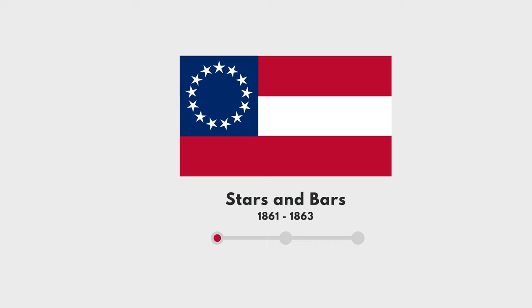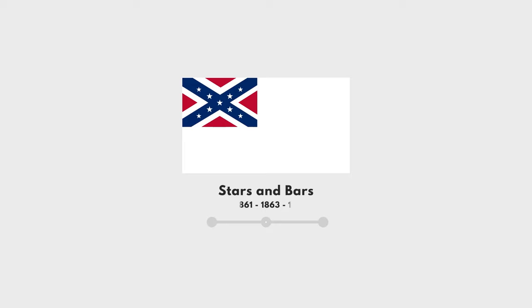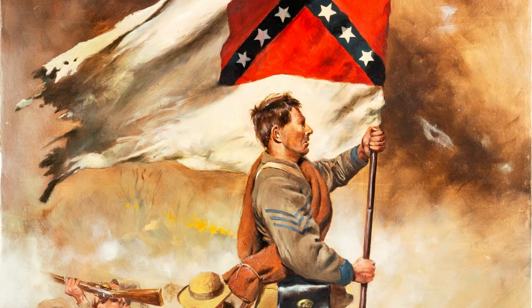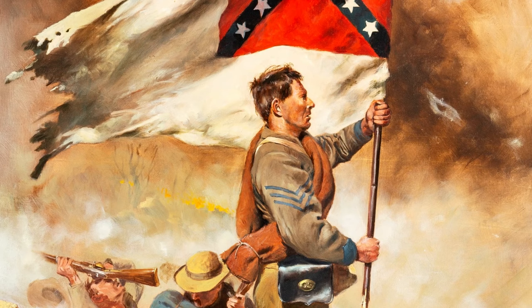In the wake of the confusion, the South rebranded their flag on May 1, 1863 to the Stainless Banner design. However, this design proved to be problematic because the predominantly white design made it look like a truce flag of surrender, especially if the wind was still. This flag was also difficult to keep clean on the battlefield, leading to complaints from military commanders.